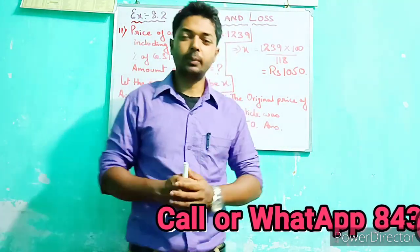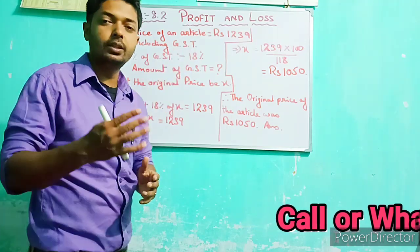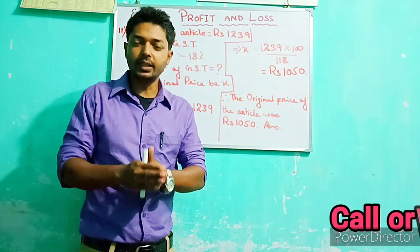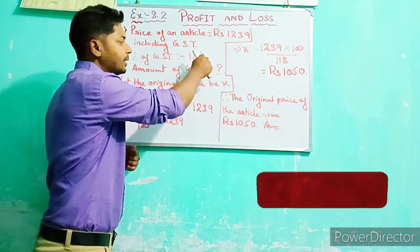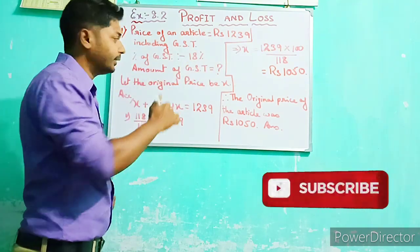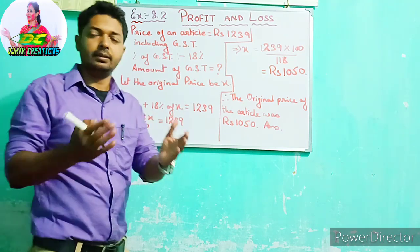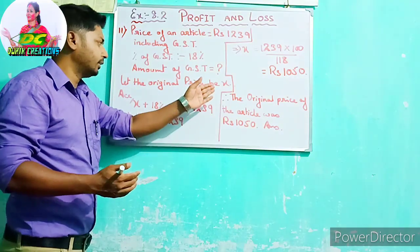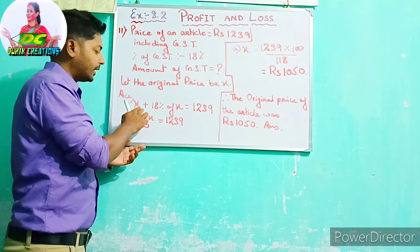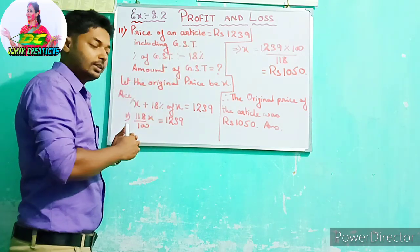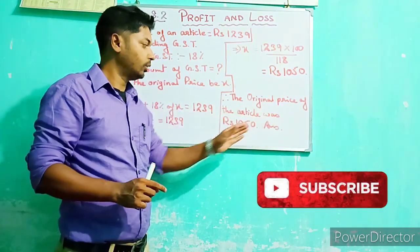Problem number 11: The price of an article is Rs. 1,239, which includes a GST of 18%. Since GST increases the price of an article, we need to find the price before GST was added. Let the original price be X. Then X plus 18% of X equals Rs. 1,239, which gives 118X divided by 100 equals 1,239, so X equals Rs. 1,050. The original price of the article was Rs. 1,050.